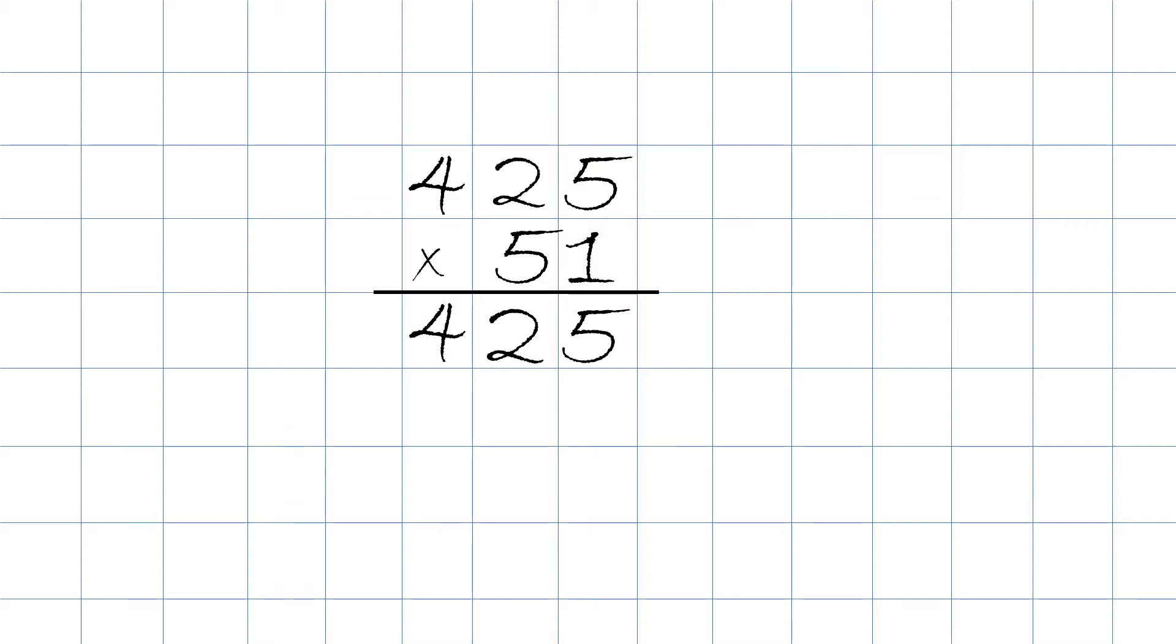Next, we will take this bottom 5 times 5, and we're going to put the answer right underneath this 5 and underneath the 2. So first thing we do is we put the 0 right up here, and then we take 5 times 5 will be 25. We only take the second digit, number 5, we'll put it right up here.